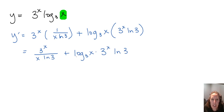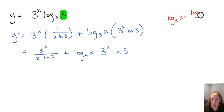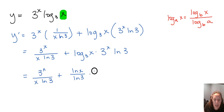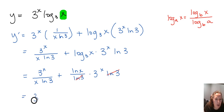Now we can simplify this a little bit. Using the change of base rule, log base a of x equals log base b of x divided by log base b of a — in this case our b is the natural base — we can rewrite log base 3 of x as the natural log of x over the natural log of 3. That's still multiplied by 3 to the x times the natural log of 3, and those natural log of 3s simplify. So we factor out 3 to the x and get 1 over x times the natural log of 3, plus the natural log of x.